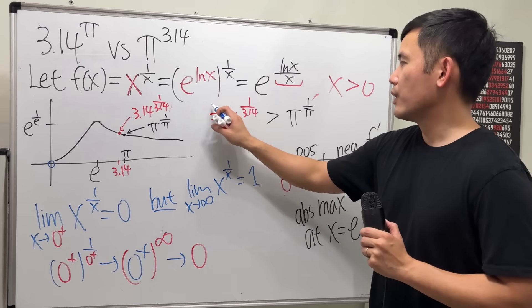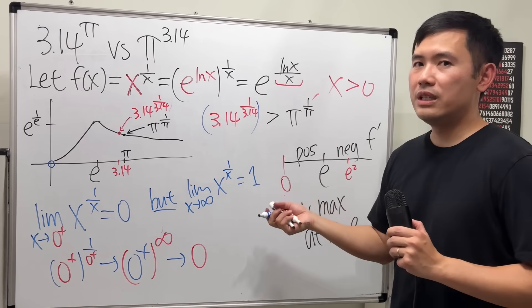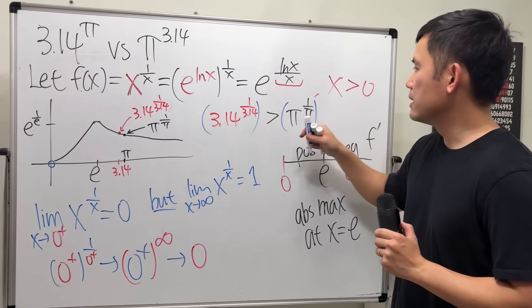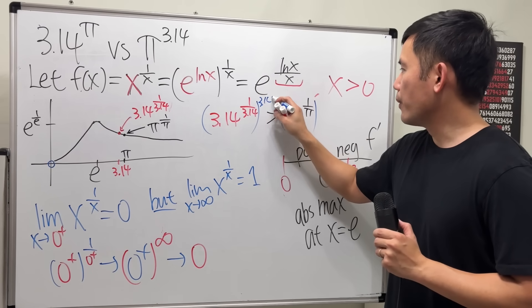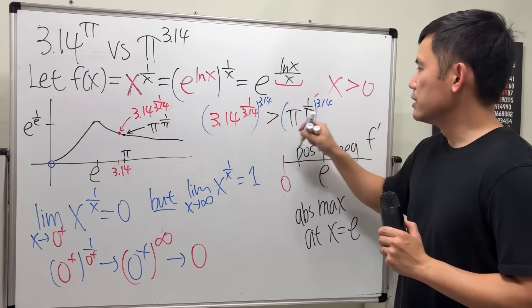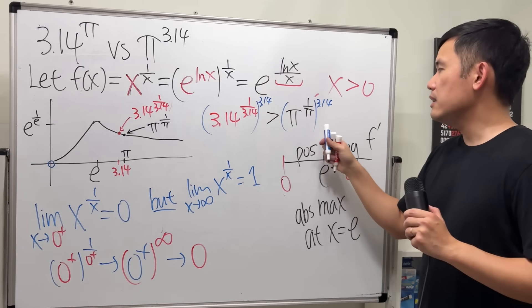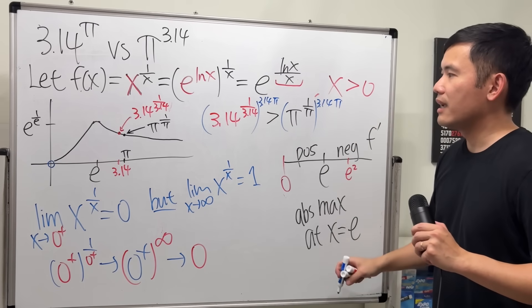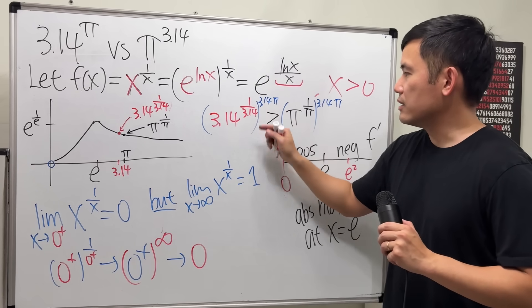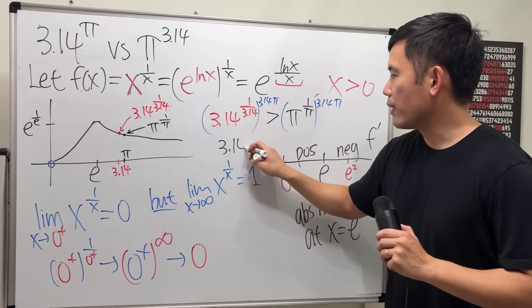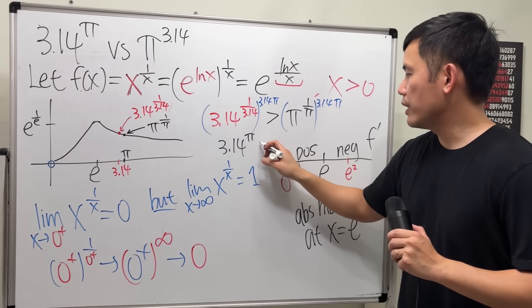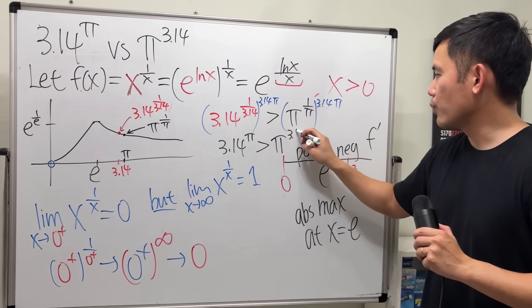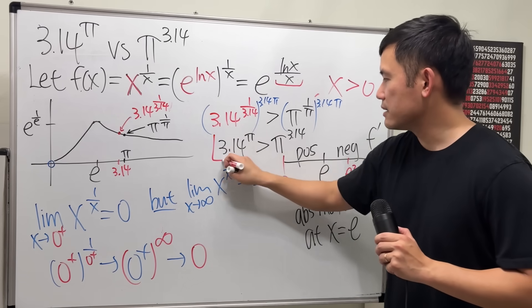So, as you can see, we can show that 3.14 raised to the 1 over 3.14 power is greater than π to the 1 over π power. And then, we can kind of do the opposite of what we did in the beginning of the video. We raise both sides to 3.14, so we can get rid of this. And in the meantime, we also want the π right here, so we can get rid of the π. This and that cancel, we get 3.14 to the π is greater than π and π cancel, π to the 3.14 power. And that is the conclusion.